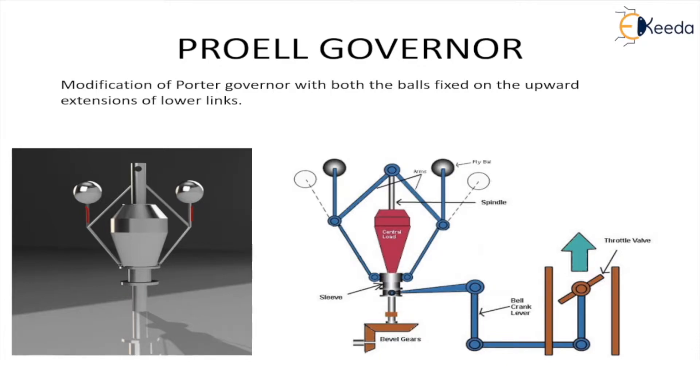Proell Governors also have the central load like the Porter Governors and this central load increases the speed of rotation. The Proell Governors are much better in function in comparison to other centrifugal gravity control Governors because they are more sensitive, they work more accurately and they work constantly without any fluctuations.